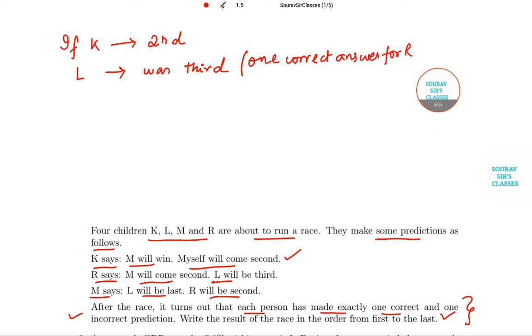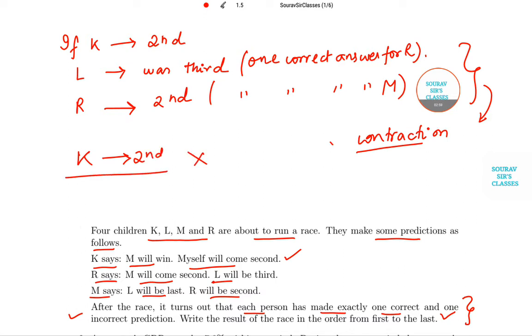And if L is third, then it is one correct answer for R. But when R would also need to be second, then one correct answer, this means one correct answer for M, isn't it? So this itself is a contradiction because both cannot happen simultaneously. So K coming second is not an option. This can't happen given this contradiction.